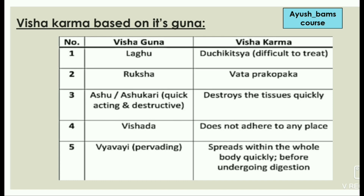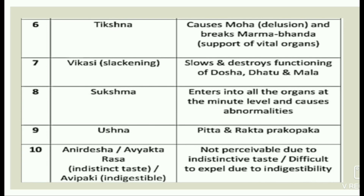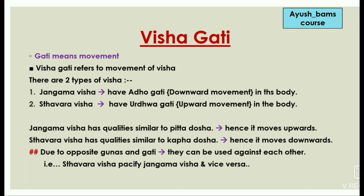The ten Visha Gunas and their actions: Laghu — Vishakarma is Dushya Chikitsa, meaning difficult to treat. Rukhsha — its karma is Vata Prakopaka. Ashu or Ashukari — its karma is to destroy tissues quickly. Vishadha — its karma is does not adhere to any place. Vyavai — its karma is spreads throughout the whole body quickly before undergoing digestion. Tikshana — causes Moha (delusion) and breaks Marma Bandha. Vikasi — slows and destroys functioning of Dosha, Dhatu, and Mala. Sukshma — enters all organs at the minute level causing abnormalities. Ushna — causes Pitta and Rakta Prakopaka. Anirdesha or Avyaktarasa or Avipaka — non-perceivable due to indistinctive taste or difficult to expel due to indigestibility.